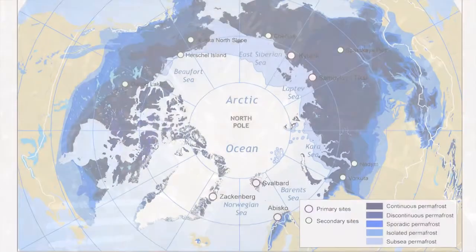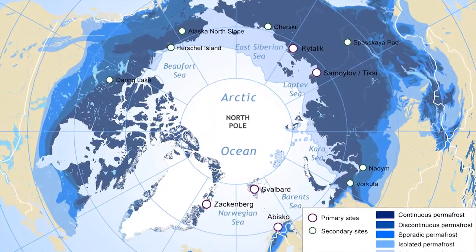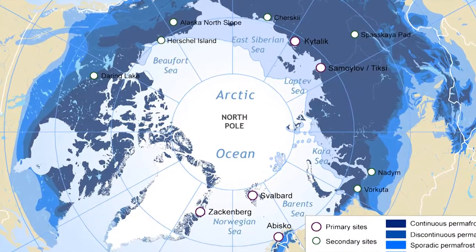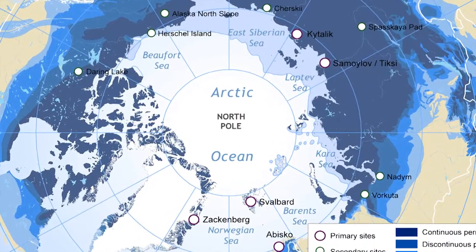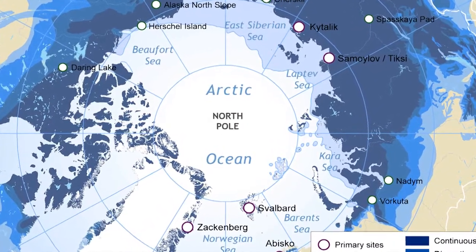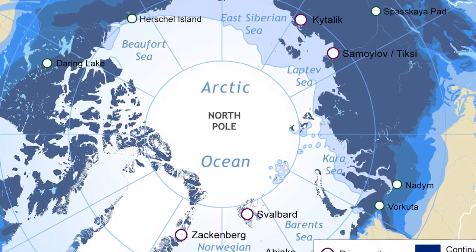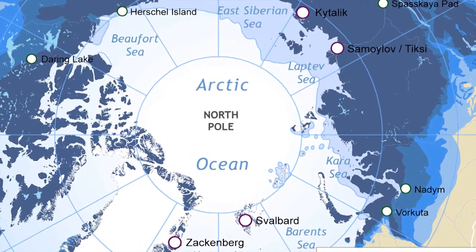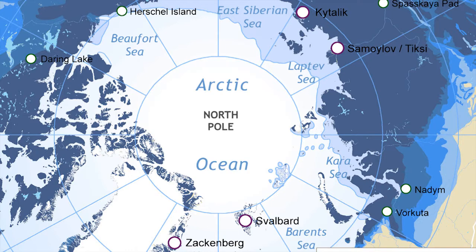If you look at the Earth overall, permafrost underlies approximately 24 to 25% of the emerged land part of the northern hemisphere. So if you take the whole globe, you can imagine that 24% of the land part of the Earth is actually frozen underneath. It is quite a spectacular number.